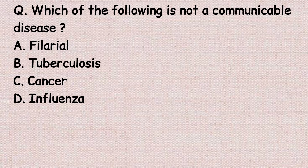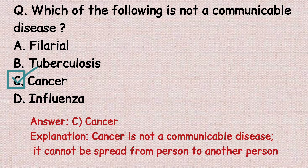The first question: which of the following is not a communicable disease? Option A: filaria. Option B: tuberculosis. Option C: cancer. Option D: influenza. The correct answer is option C, cancer. Cancer is not a communicable disease — it cannot be spread from one person to another.